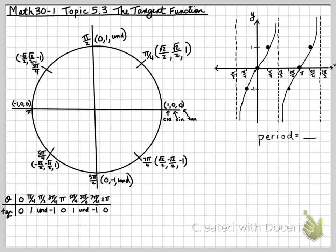The period, how often it repeats, is going to be every pi radians. The amplitude, well, since it goes from negative infinity to positive infinity, the answer would be infinity.